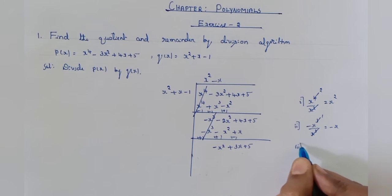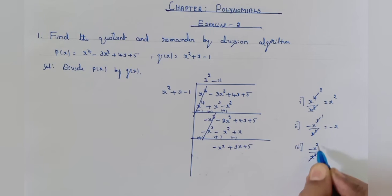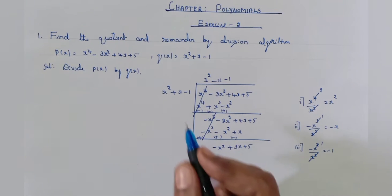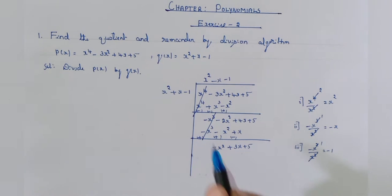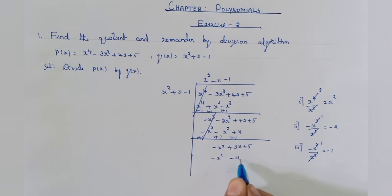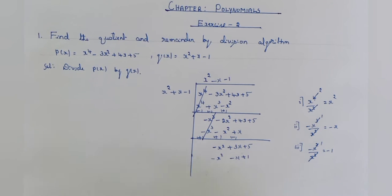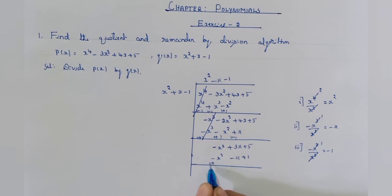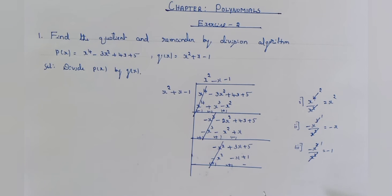The first term of the dividend is minus x square. Divide minus x square by x square — it divides one time. Write minus 1 in the quotient place. Multiply by minus 1: x square into minus 1 is minus x square, plus x into minus 1 is minus x, minus 1 into minus 1 is plus 1. Change the signs: plus x square, plus x, minus 1. Minus x square plus x square get cancelled.